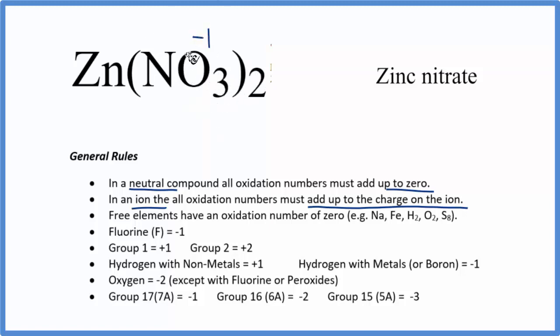Because of that, we have two nitrates. Each one is minus one. Two times minus one, that's minus two. For this to all add up to zero, zinc has to have an oxidation number of plus two. So that's the oxidation number for zinc in zinc nitrate.